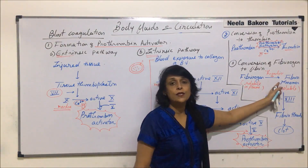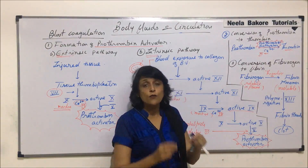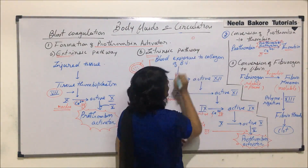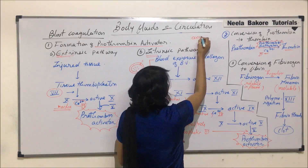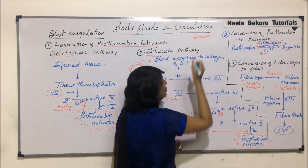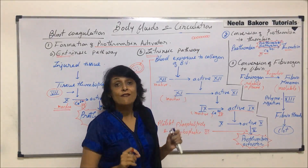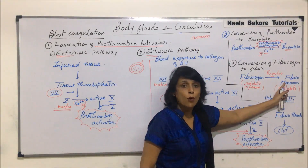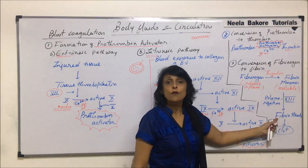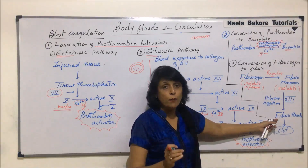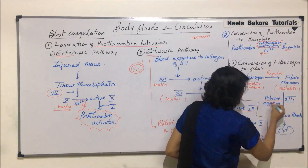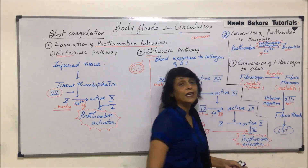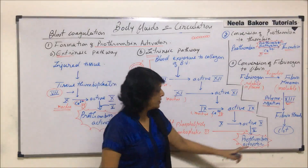These monounits undergo polymerization to form a thread. Each monounit joins with others to form the fibrin thread. So the fibrin monomer gets converted into a fibrin thread, which is a polymer, and this process is known as polymerization. Factor 13 is required for this step.